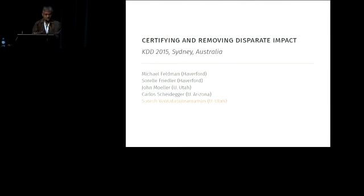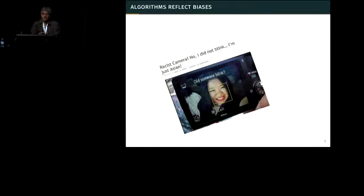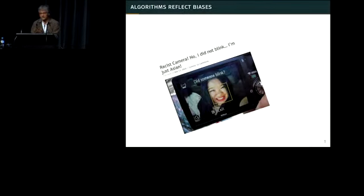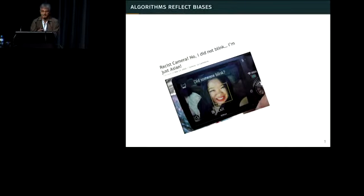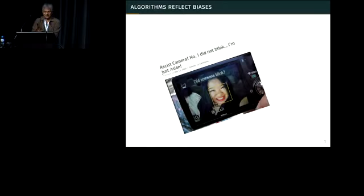This is the first example, going back a couple of years ago. A blogger noticed that her Nikon camera — and I'm not picking on Nikon here, it probably would happen to other cameras too — had a facial recognition feature that was trying to helpfully tell someone their picture didn't come out right because their eyes were closed. This is an Asian blogger, and for some reason the camera kept assuming that her eyes were closed, when of course they were not. It turned out the camera had been trained on data that would expect the eyes to be much further open than they actually were.